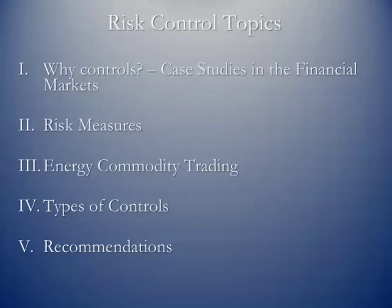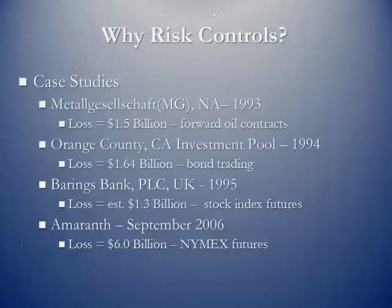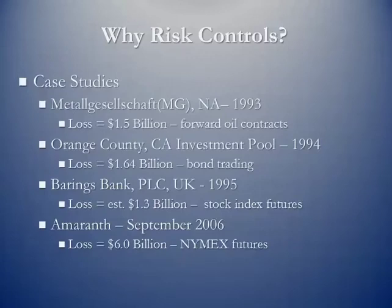And last, we're going to talk about some recommendations — if you were to sit down with a company and make some recommendations for a risk program for them, I've got a list of things you might want to say or recommend to them. We talked about these case studies already. I added a fourth one — as late as 2006 there was another trading company, Amaranth, and they lost $6 billion trading NYMEX Futures. Again, not enough oversight.